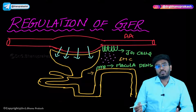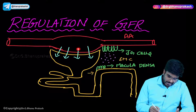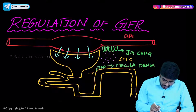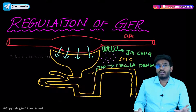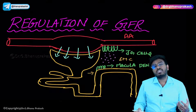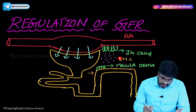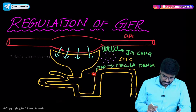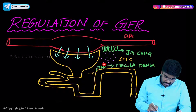Before discussing how this is achieved, you need to know about something known as the juxtaglomerular apparatus. We know this structure is the glomerulus, with the glomerular capillaries and Bowman's capsule together forming the glomerular body. Now 'juxta' means 'side,' so side to the glomerulus there is an apparatus made up of three different types of cells known as the juxtaglomerular apparatus. The first group of cells are present on the earliest part of the distal convoluted tubule, and these cells are known as macula densa.